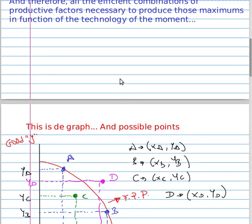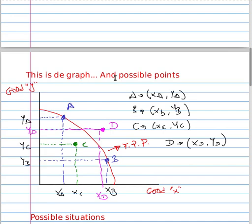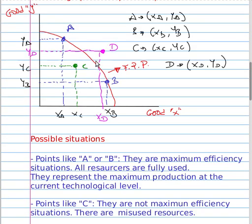This is the graph from the frontier or border and the possible points. You can see four points: A, B, C, and D. Now we're going to work on these points.